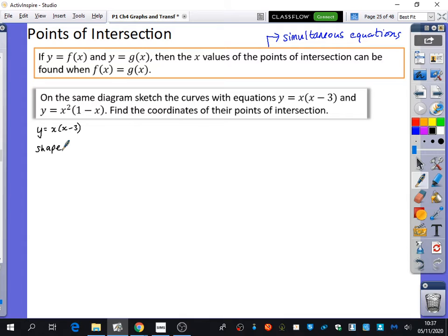A positive quadratic. So the shape is like this. The roots? x equals 0 and 3. The y-intercept? 0. Y equals 0. OK, so we've got that first one there.